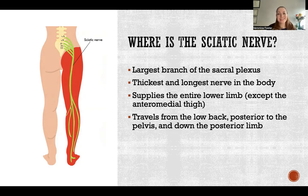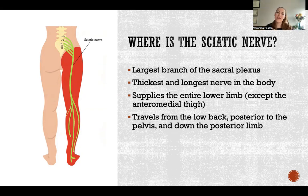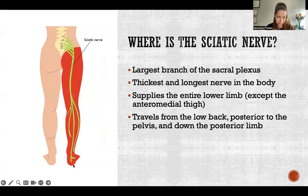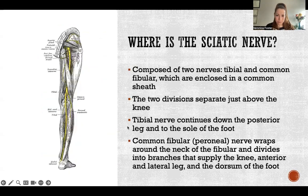It supplies the entire lower limb except for the anteromedial thigh — the portion of the thigh that's toward the middle and in the front. It travels all the way from the low back, as we see in the picture here, all the way down the whole posterior lower limb, all the way down to the bottom of the foot.